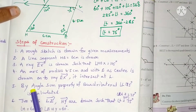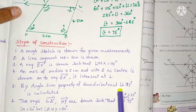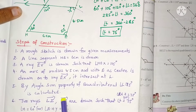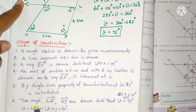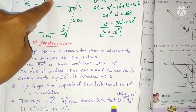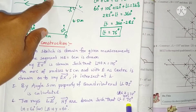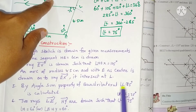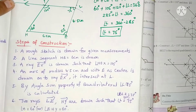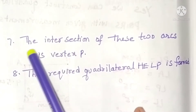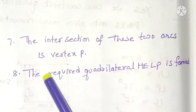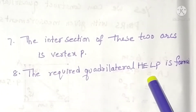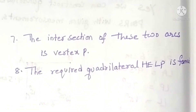Steps of construction: By the angle sum property of quadrilateral, angle L = 75 degrees is calculated. Then two rays LZ and HY are drawn such that angle L = 75 degrees and angle H = 60 degrees. The intersection of these two rays is the vertex P. The required quadrilateral HELP is formed.